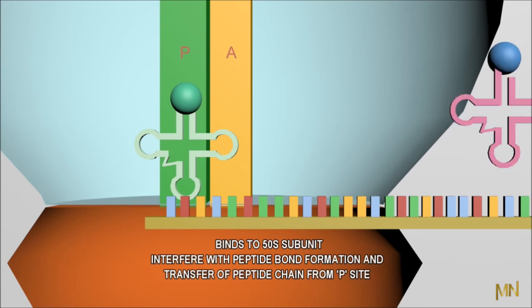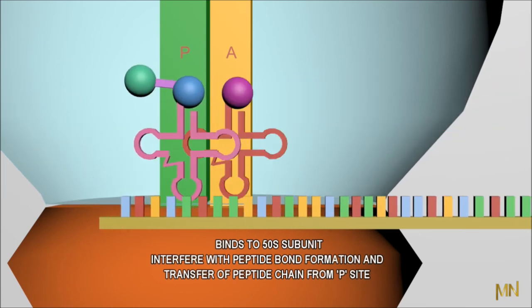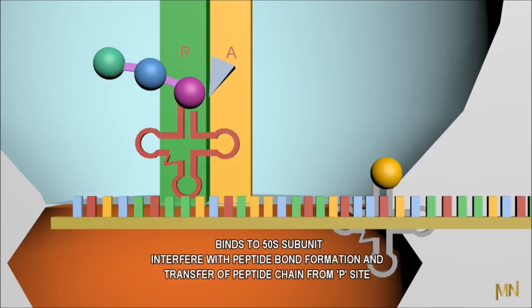But chloramphenicol binds to 50S subunits, interferes with peptide bond formation and transfer of peptide chain from P site.